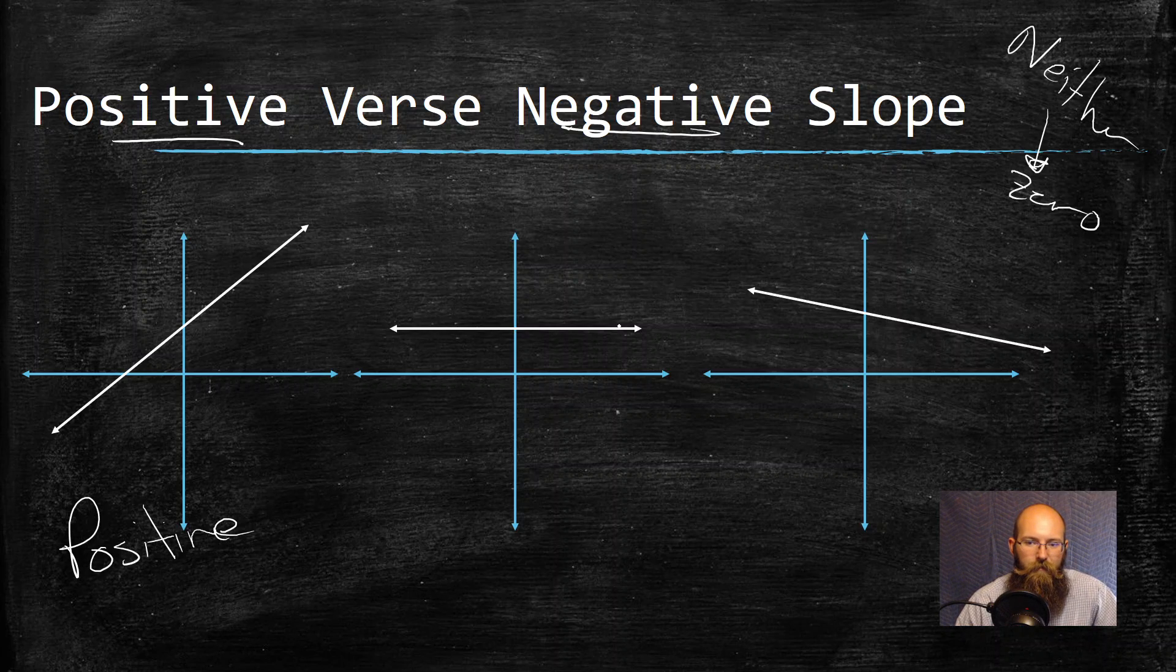In the middle, see how it's flatlined, right? There's zero things happening. So that's a slope of zero.